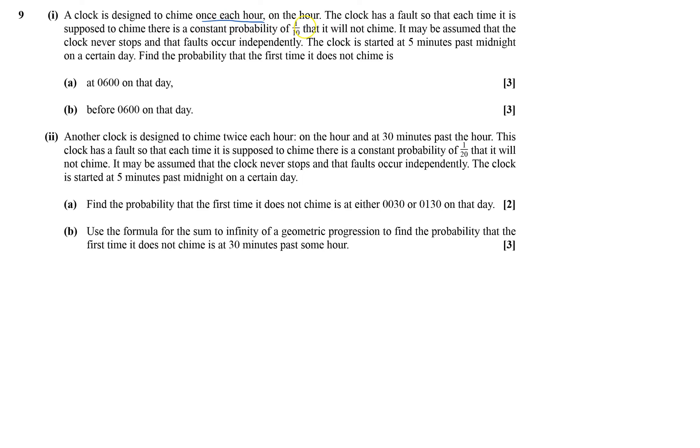The clock is designed to chime once each hour on the hour. There's a fault, so each time it is supposed to chime there's a constant probability of one-tenth that it will not chime. The faults occur independently.